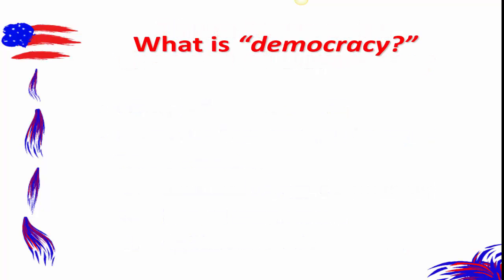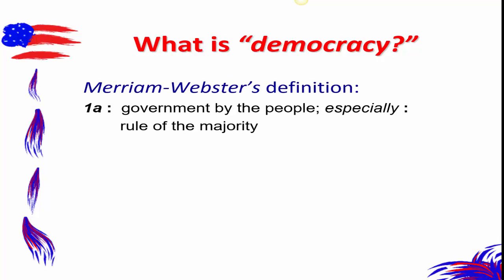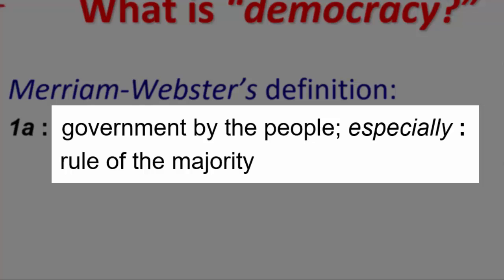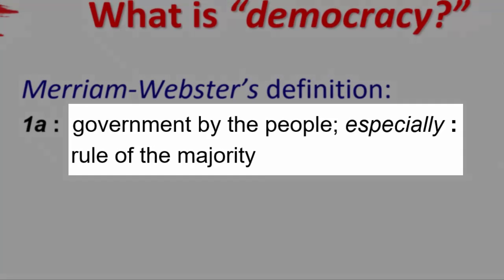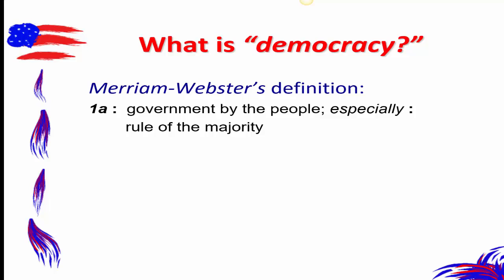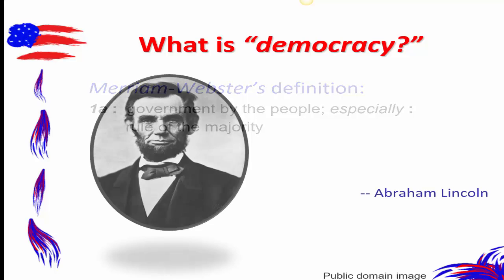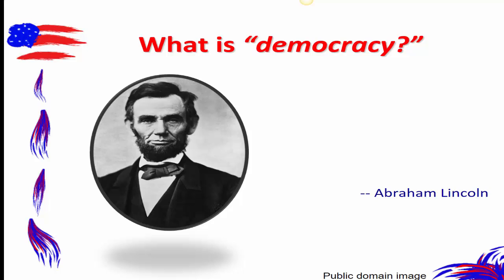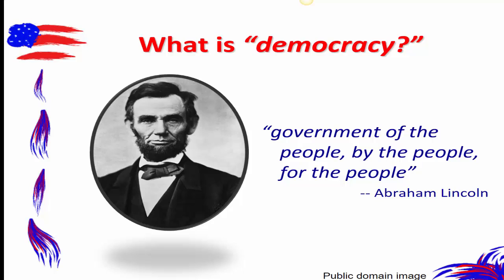So what do we actually mean by democracy in the first place? When we want to define concepts, sometimes we go to the dictionary. Merriam-Webster's first definition is: government by the people, especially rule of the majority. This basic definition is in line with most primary assumptions about democracy ever since the term was invented, probably most popularized in the US context by Abraham Lincoln's Gettysburg Address: government of the people, by the people, for the people.